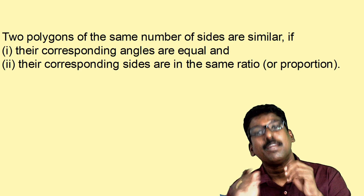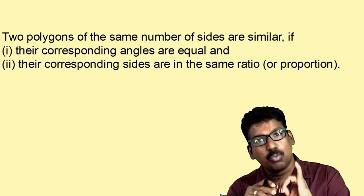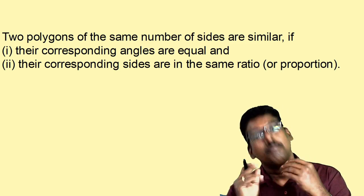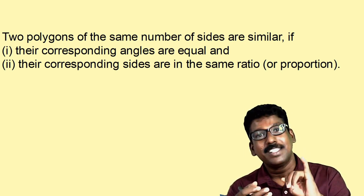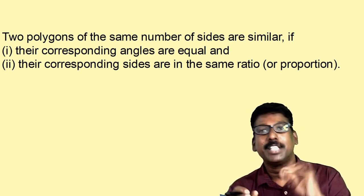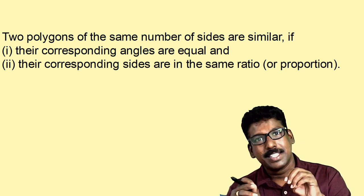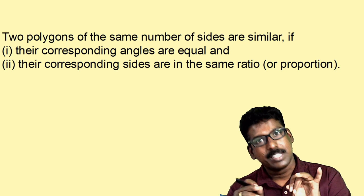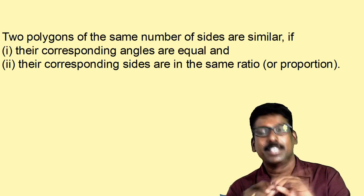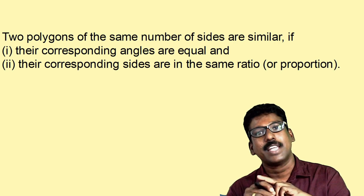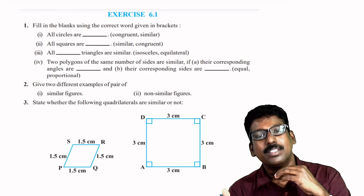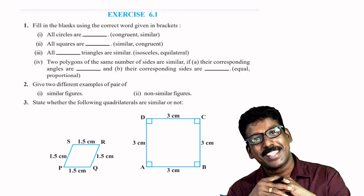So we can conclude: two polygons of the same number of sides are similar if their corresponding angles are equal and their corresponding sides are in the same ratio or proportion. Similar figures are figures having the same shape but need not be the same size. All circles, squares, and equilateral triangles are similar. Now look at some textbook questions — here is a very simple question, you do it yourself. That is all for today's class.